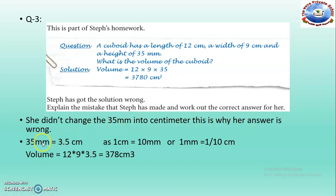So convert 35 millimeters — that is equal to 3.5 centimeters. Now length is 12 cm, width is 9 cm and height is 3.5 cm. When we multiply these three things, we get the correct answer: 378 cubic centimeters. Remember: if one measurement has different units, convert everything to the same units first, otherwise your solution will be wrong.